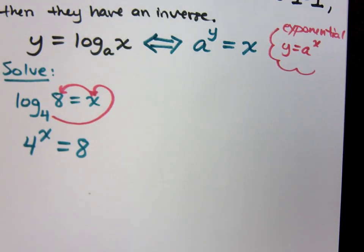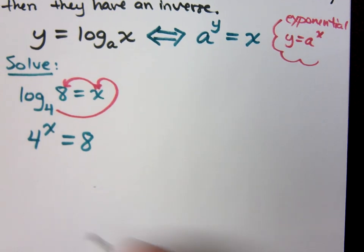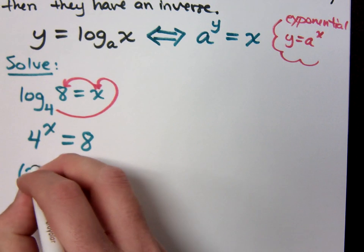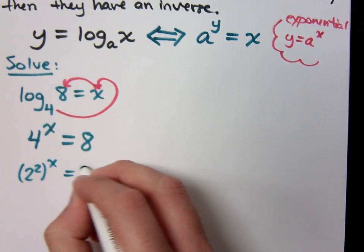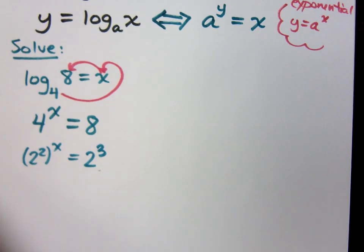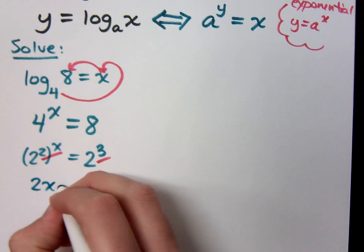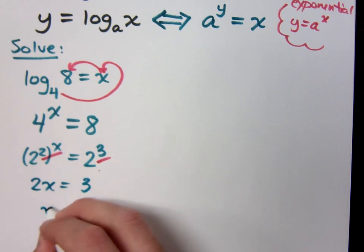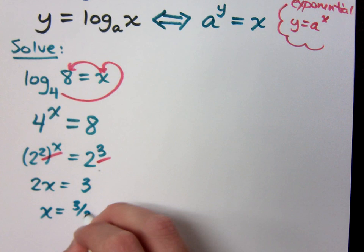2. That's me being Doug, being somebody else. So that means this is 2 squared to the x equals 2 to the 3rd, right? Really, we know what this means, right? Yes, so 2x equals 3, so x equals 3 halves.